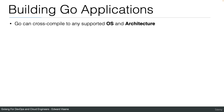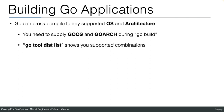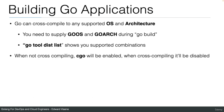ARM64 is now used by MacBooks. It can also be another architecture used on embedded devices or servers. You need to supply the GOOS environment variable and the GOARCH environment variable during go build to compile for another operating system or architecture. The go tool dist list command shows you the supported combinations for cross-compiling.